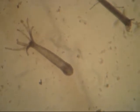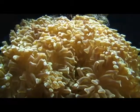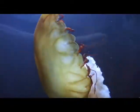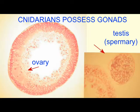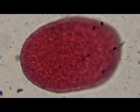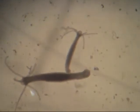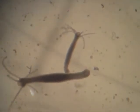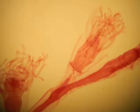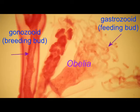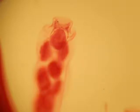Cnidarians can have two life cycle stages: a cylindrical polyp with tentacles around a central mouth, or a free-swimming medusa. Although some animals, such as corals, only have the polyp stage, and some jellyfish only have the medusa stage. If there is a medusa stage, this is the stage where meiosis and sexual reproduction occurs.